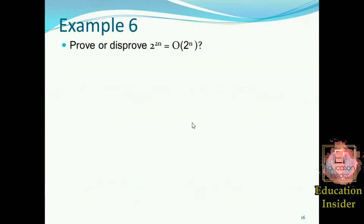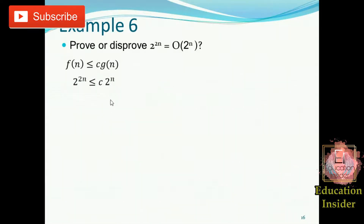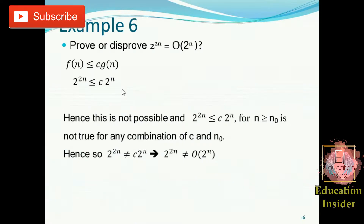Let's move to example six. This is similar to example four. We assume the inequality and populate the values. As you can see, f(n) must be smaller than g(n), but 2·2ⁿ is greater than 2ⁿ, so we can simply say that this inequality does not hold and we cannot bound this f(n) by this g(n).